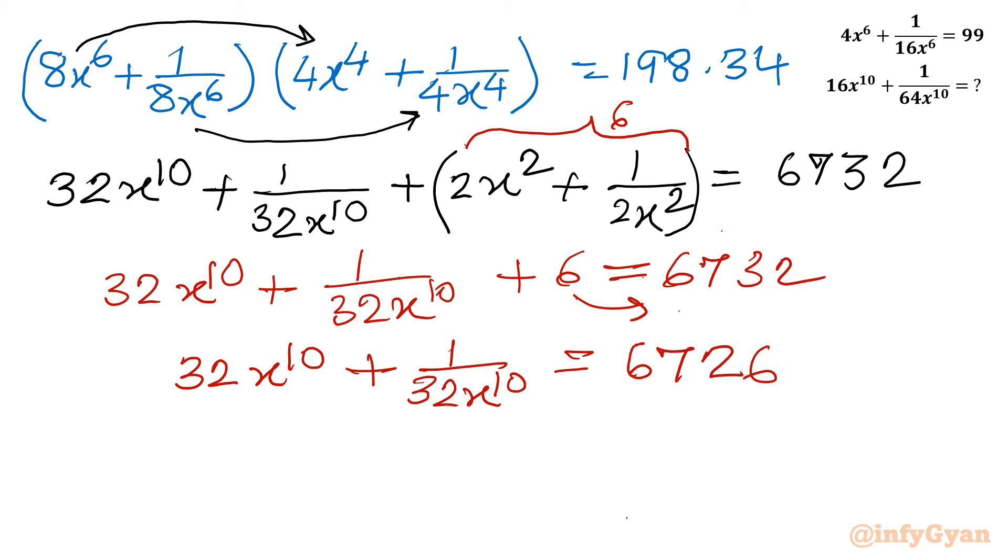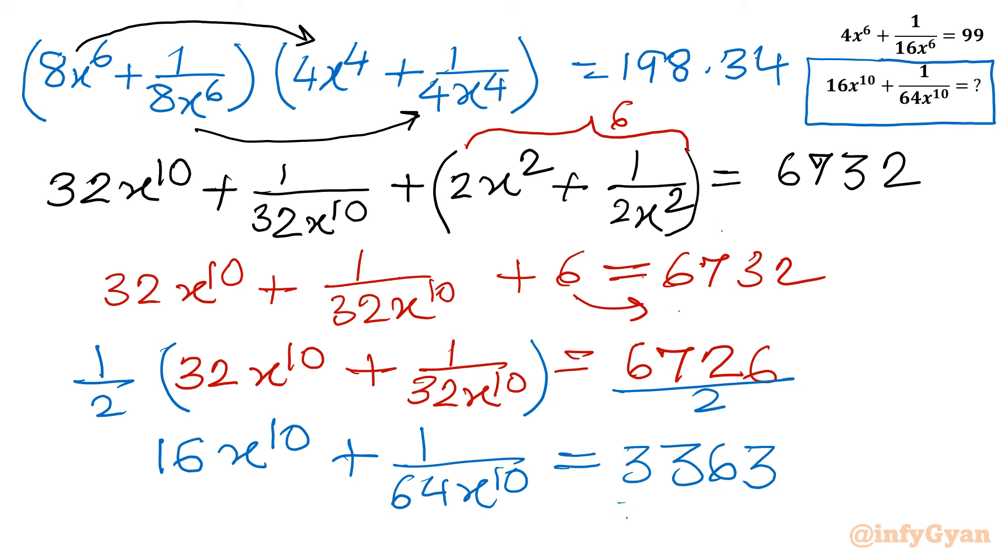But our required expression is 16x^10 plus 1 over 64x^10. So what I will do is multiply both sides by one half, or divide by 2. So this will give the expression 16x^10 plus 1 over 64x^10, which is our required expression. And the right hand side will be 6726 over 2, which is 3363. So our ultimate answer is 3363.